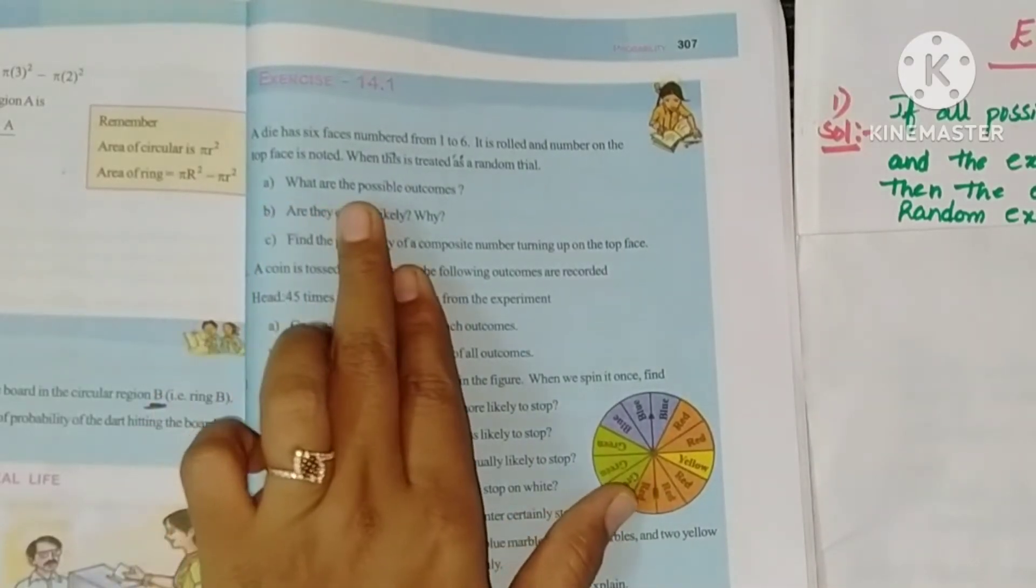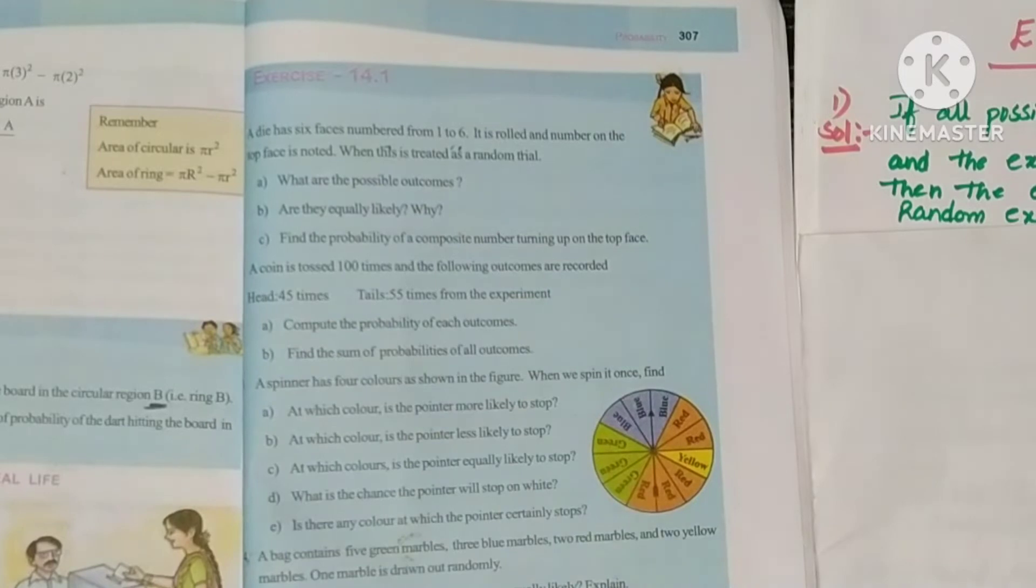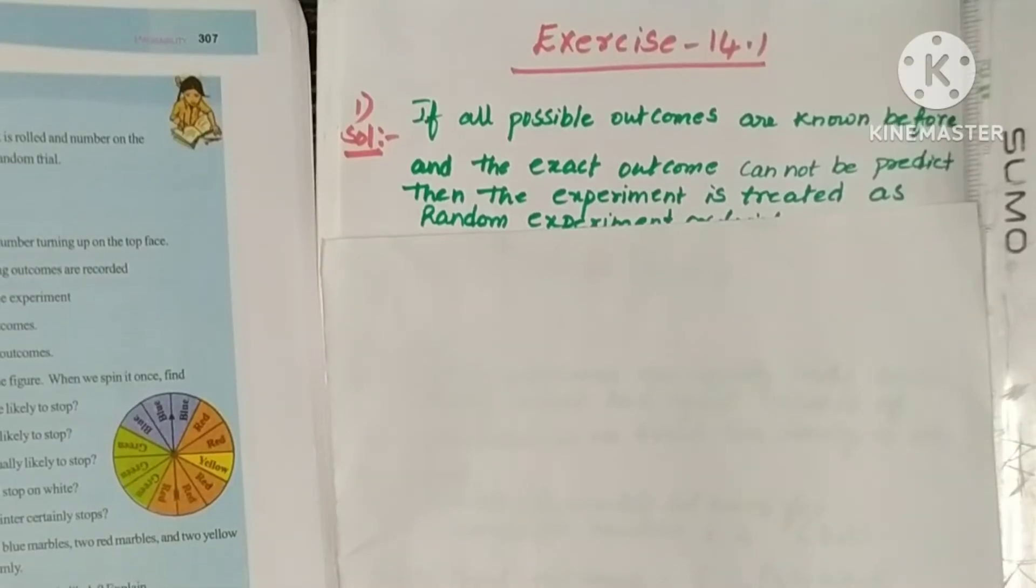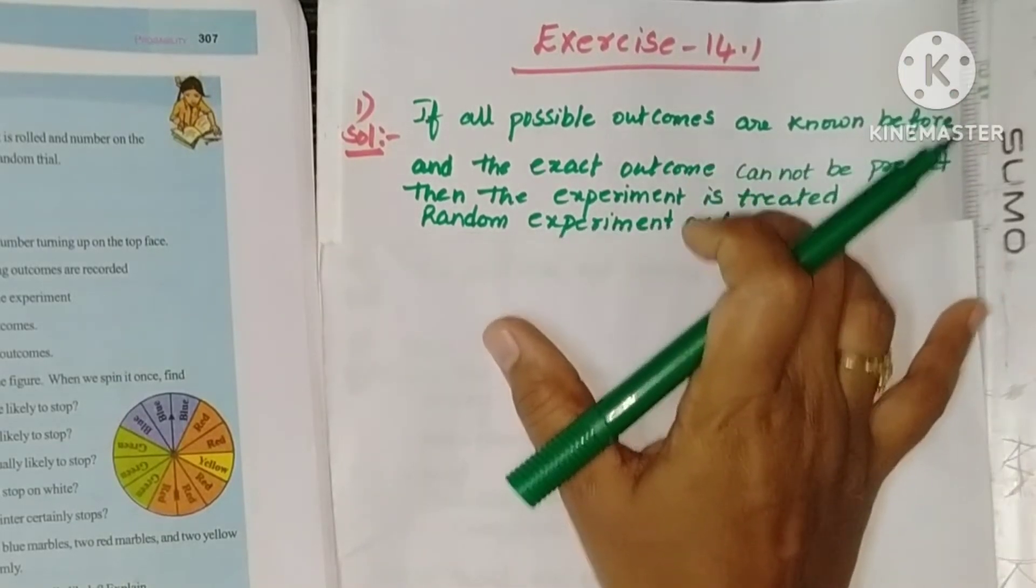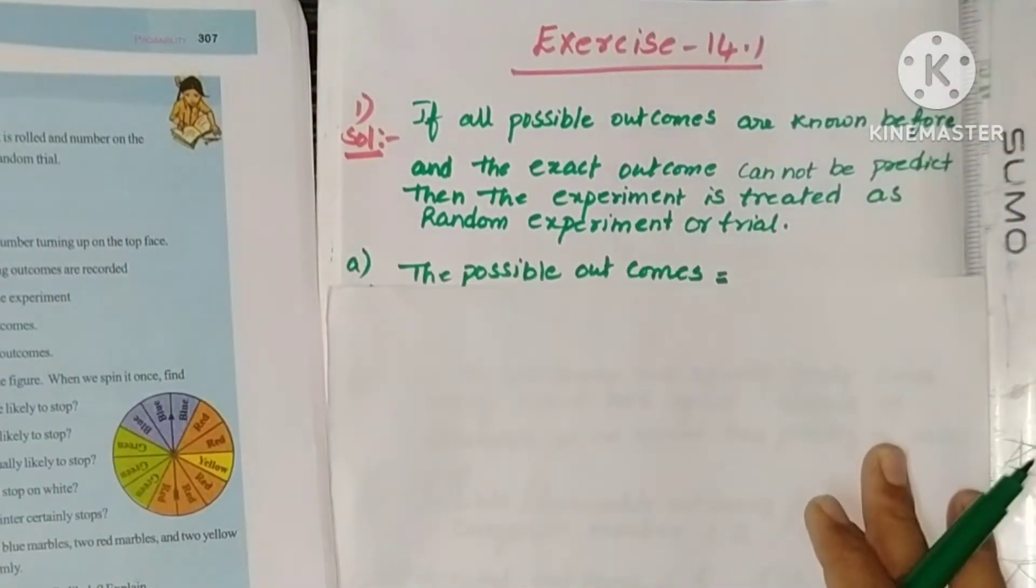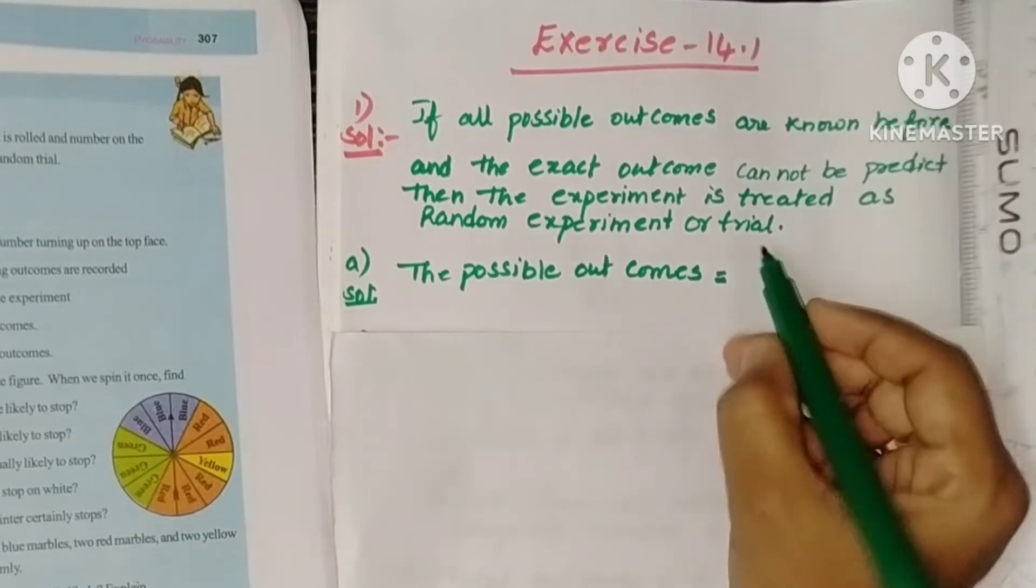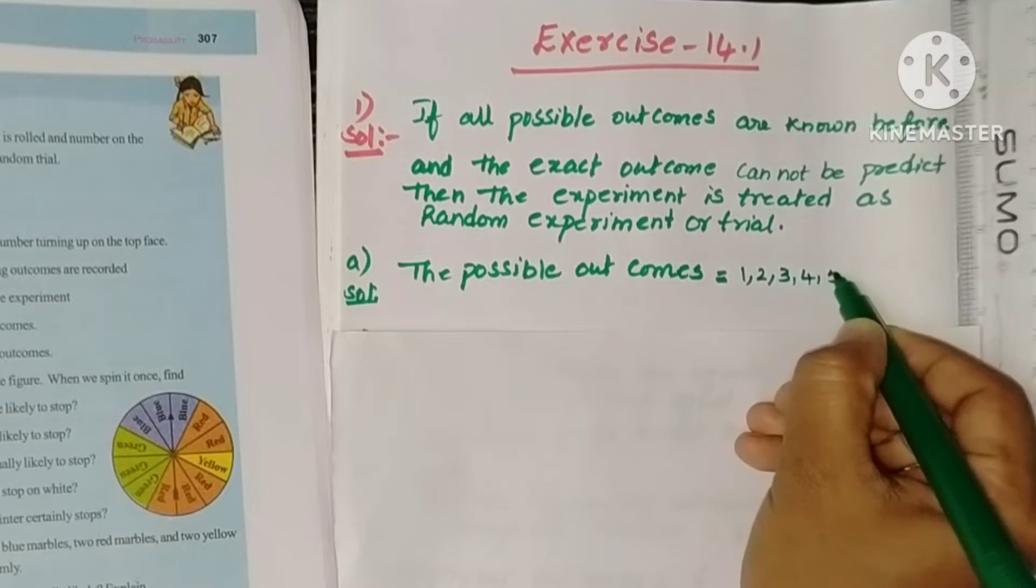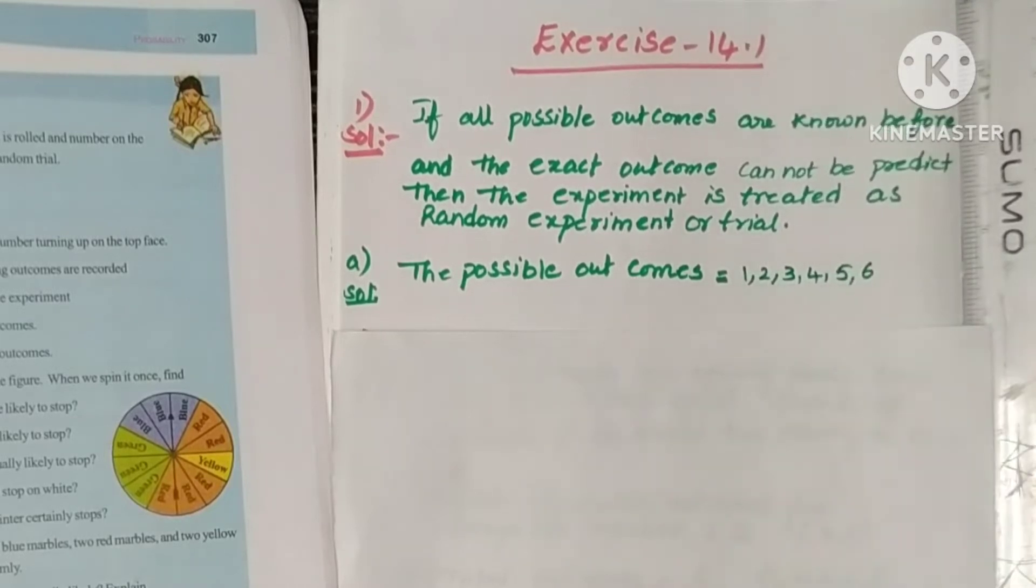Now first one: What are the possible outcomes when a die is rolled? 1, 2, 3, 4, 5, 6, right? So the answer for that is, the possible outcomes equals to, we can write 1, 2, 3, 4, 5, and 6.